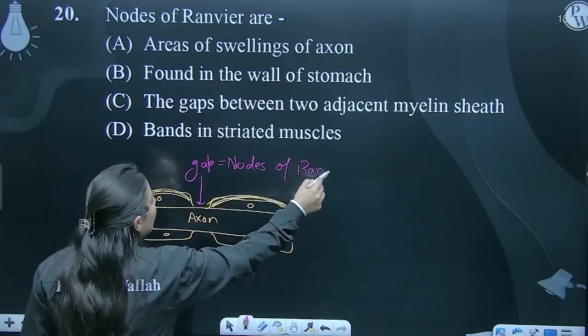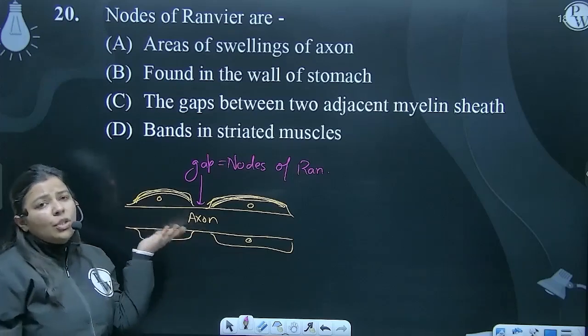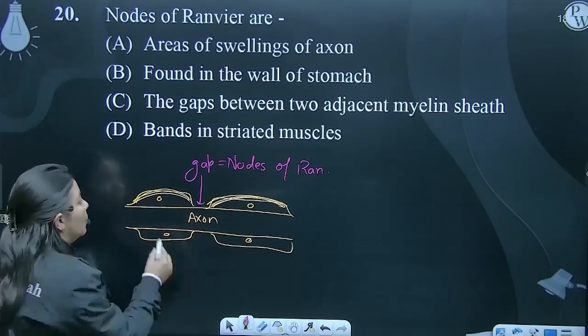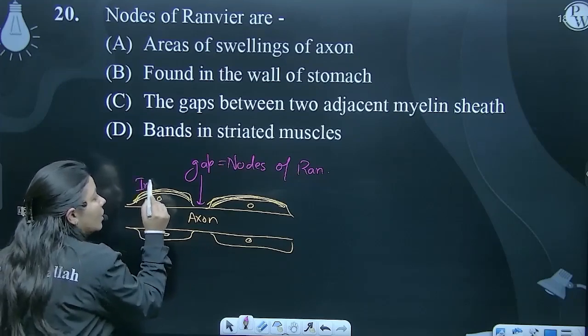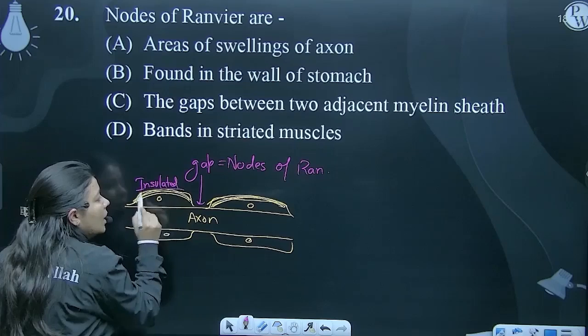Now these Nodes of Ranvier are responsible for the conduction of nerve impulse, because this is insulated. Myelin sheath is an insulated structure, insulated layer.